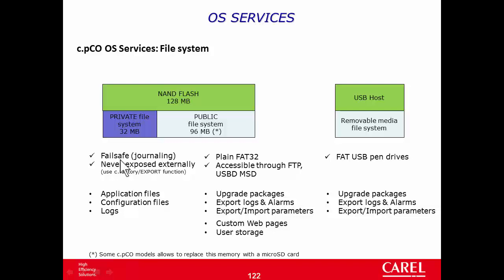To understand the advantage of the failsafe feature, consider a scenario with non-failsafe memories like a pendrive. If you disconnect a pendrive while copying a file, you may lose only that file, or in the worst case, corrupt the whole file system and lose everything. This can't happen with private memory because we have implemented a technology called journaling that prevents corruption of the whole file system.